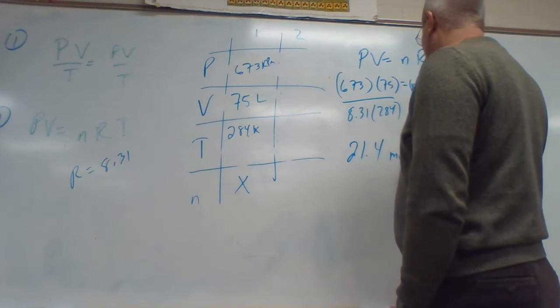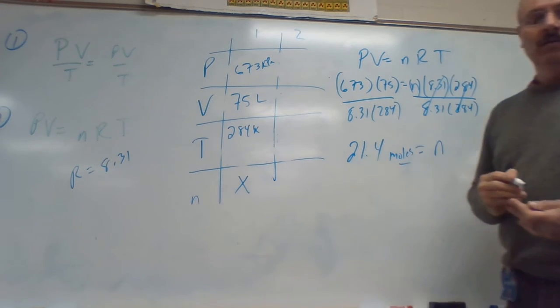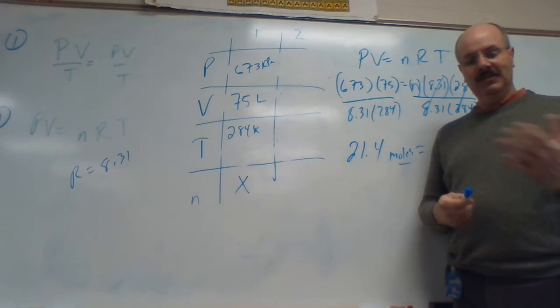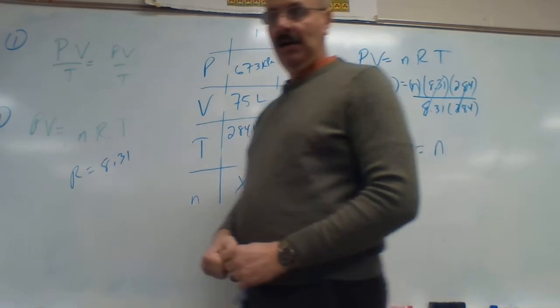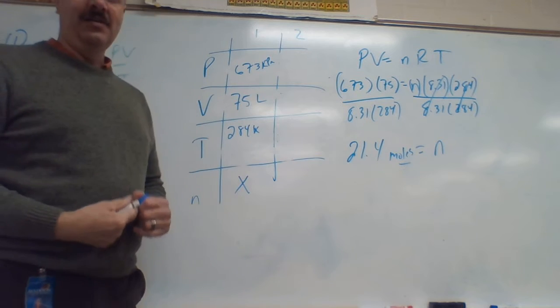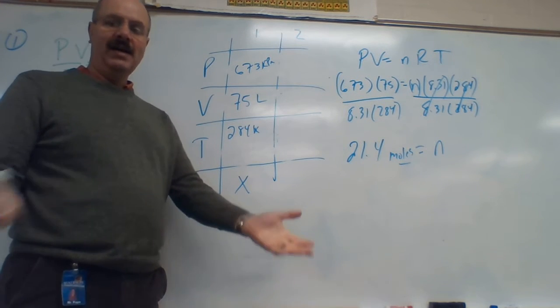Type this into the calculator. And you should get 21.4 moles. What in the world is a mole? Well, a mole is a unit to count things in chemistry. It's kind of like, basically like a dozen.